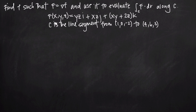We've been told that our vector field capital F of x, y, z is equal to: yz times i, plus xz times j, plus the quantity xy plus 2z times k. We've also been told that C is the line segment connecting the points (1, 0, -2) and (4, 6, 3).